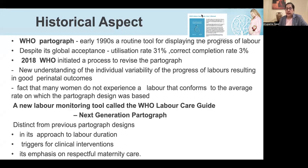This is why in 2018, WHO initiated the process to revise the partograph, resulting in the modified version. A new understanding of individual variability in labor progress had resulted in good perinatal outcomes. The fact that many women do not experience labor conforming to the average rate of one centimeter per hour — and that this may lead to earlier cesarean sections — drove this new design, now called the next-generation partograph.